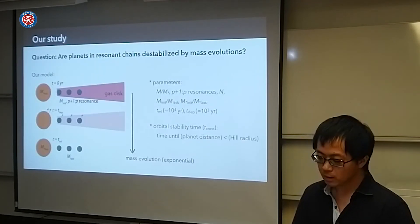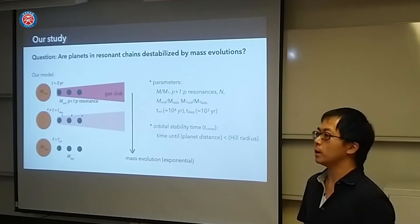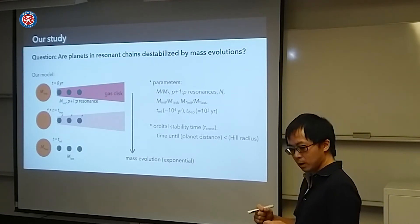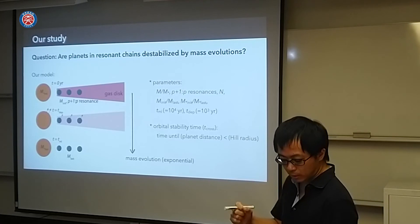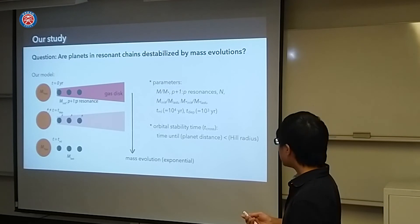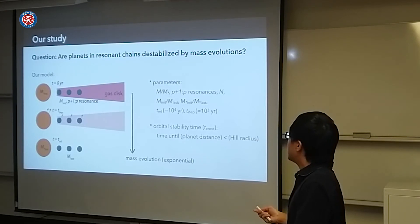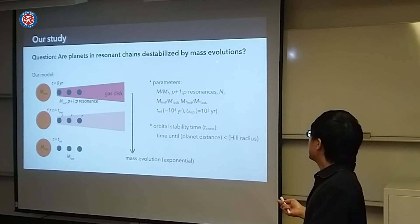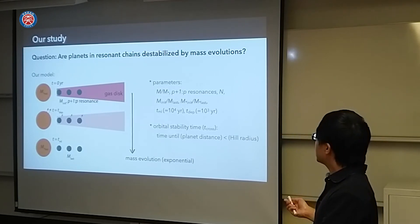These stellar mass losses also affect the final configuration of planets. It's not so significant a process like half mass is lost, but only 1% is lost. But since resonance depends on only some angles, resonances are very dependent on their configuration. These 1% changes destabilize these systems. This is our idea. These planets in resonance chains are destabilized by these 1% mass evolutions.